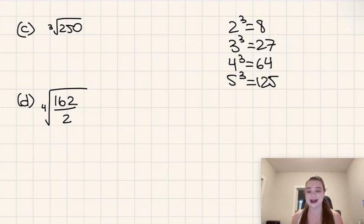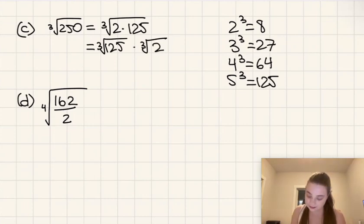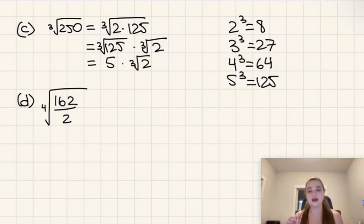So we have a cube root of 2 times 125, which means we have cube root of 125 times cube root of 2 because we can separate those. And then cube root of 125 is just going to be 5. So this is 5 times cube root of 2. And there we go. That's our simplest form because 2 itself certainly doesn't have any factors that are perfect cubes other than 1.